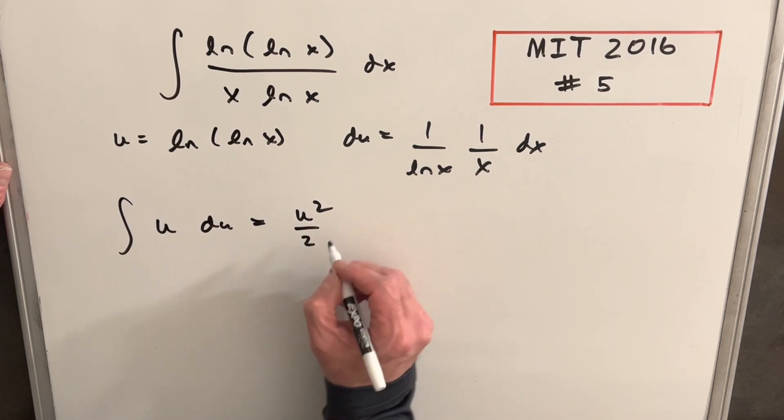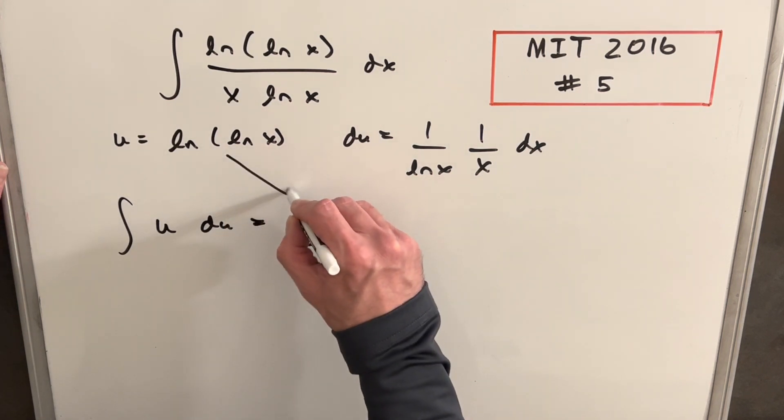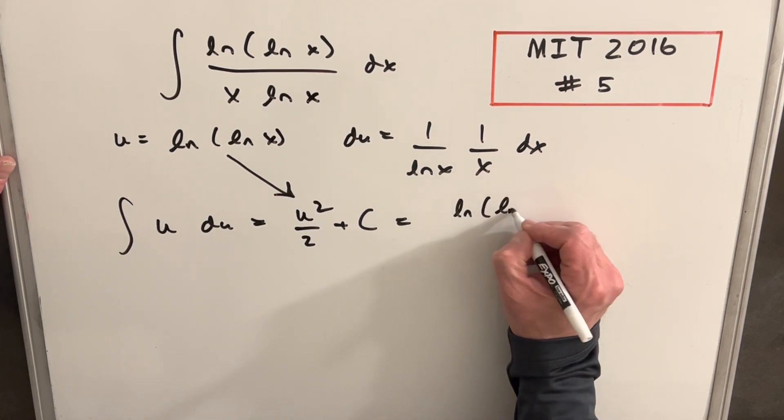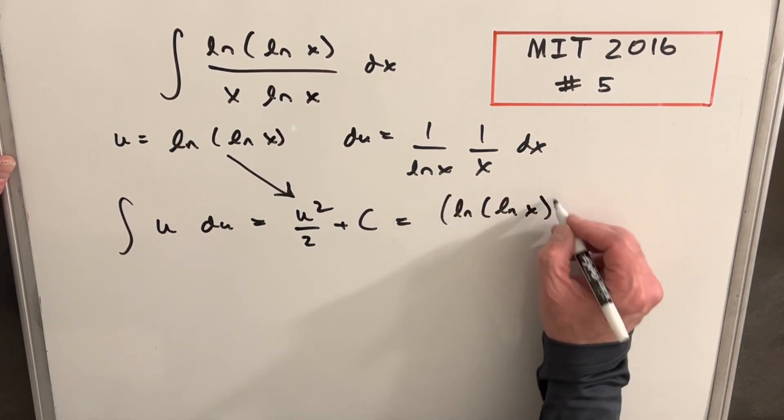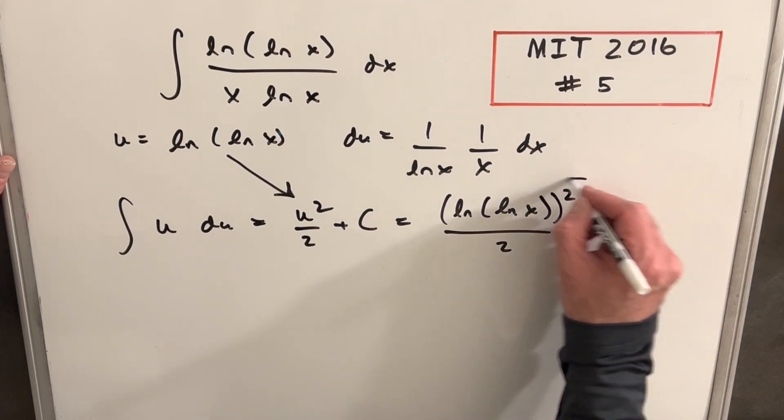So our answer, well, in u, it's going to be u squared over 2 plus C, and we just need to back-substitute. Plugging it in, we're going to have ln(ln x) all squared over 2 plus C, and we're done.